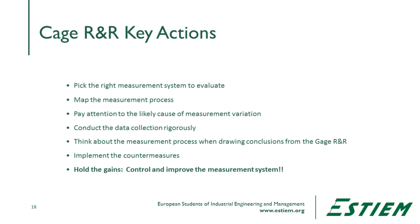According to the Automotive Industry Action Group, you absolutely must change a measurement system that doesn't meet standards — their bias is to force all suppliers to improve measurement system quality. The key actions are: pick the right measurement and evaluate that system; map the measurement process so everyone collecting, observing, and interpreting data is doing the same thing; pay attention to likely causes of measurement variation within and between operators; and conduct data collection in a rigorous way following prescribed methods.